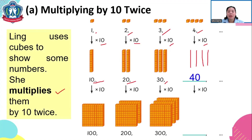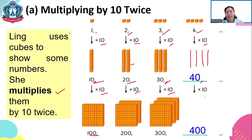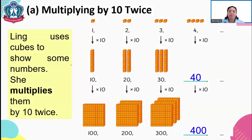Now if we multiply 10 by 10 again, it makes 100. 20 multiplied by 10 becomes 200. 30 multiplied by 10 is 300, and 40 multiplied by 10 is 400. Do you notice something? What will happen to the number if we multiply it by 10?